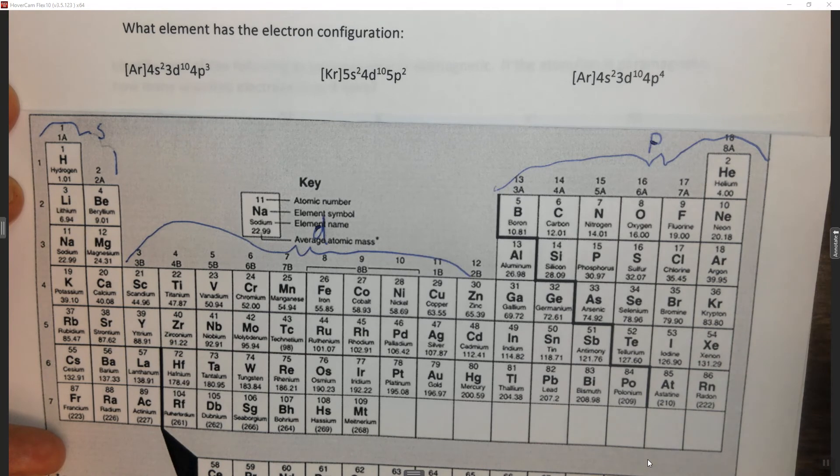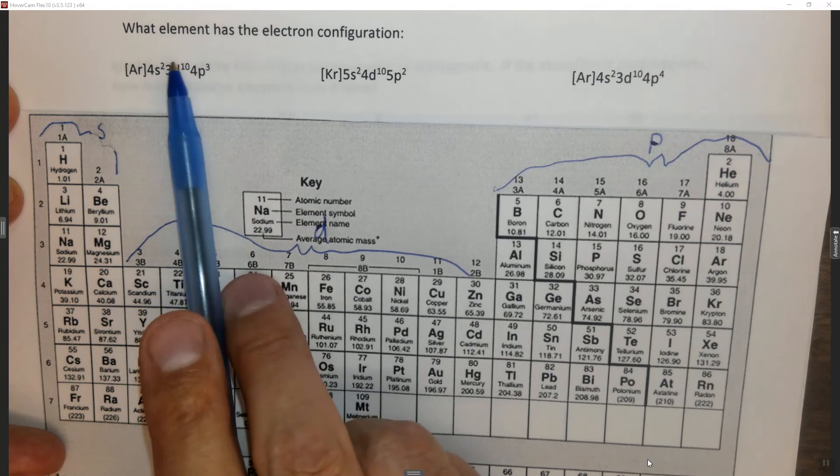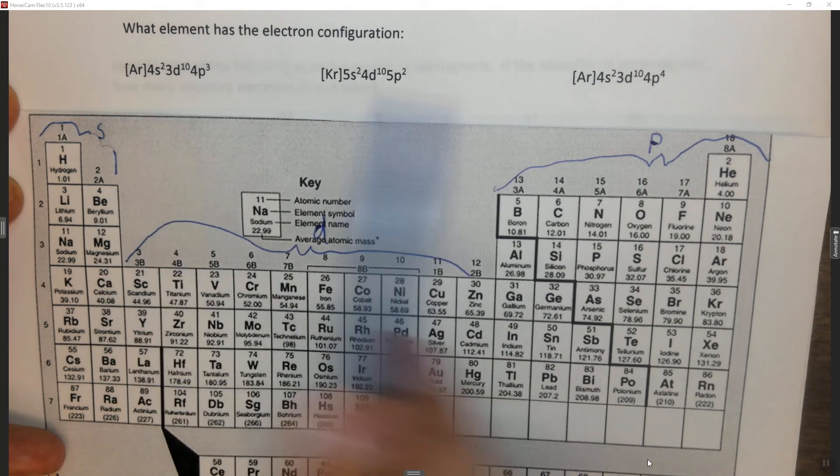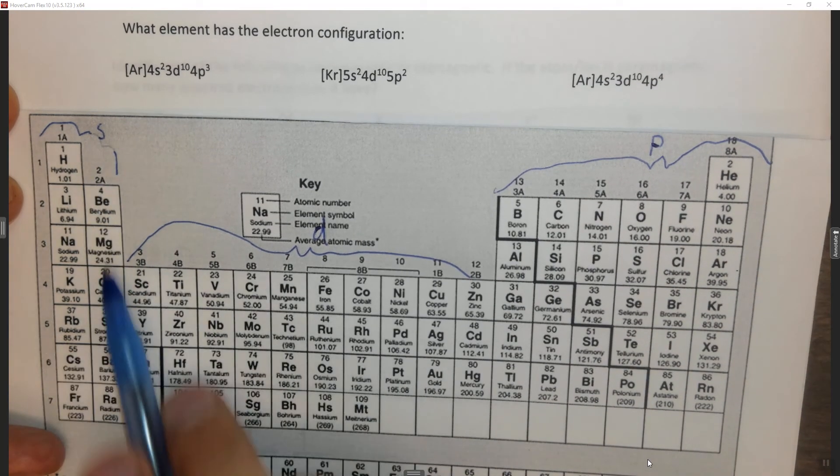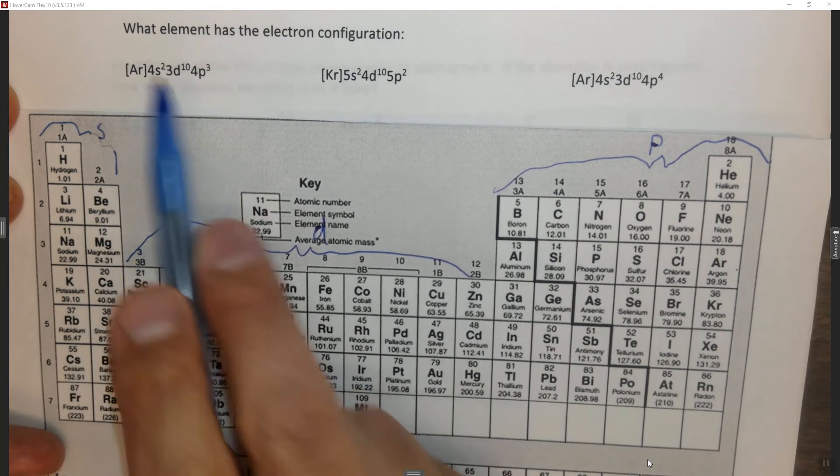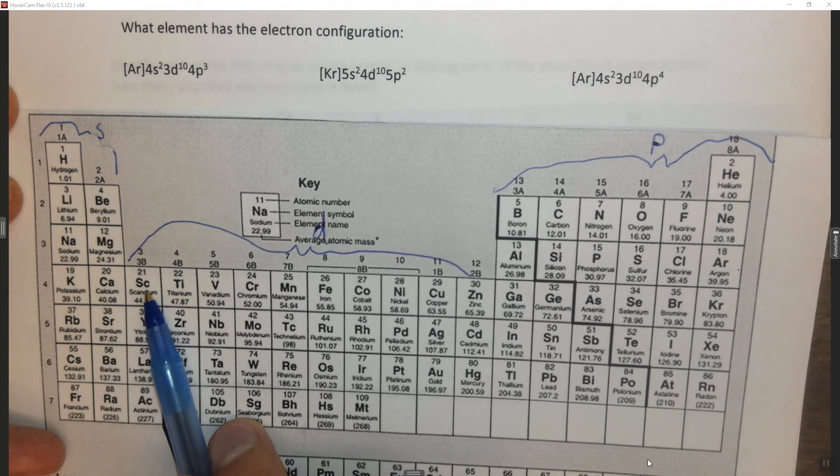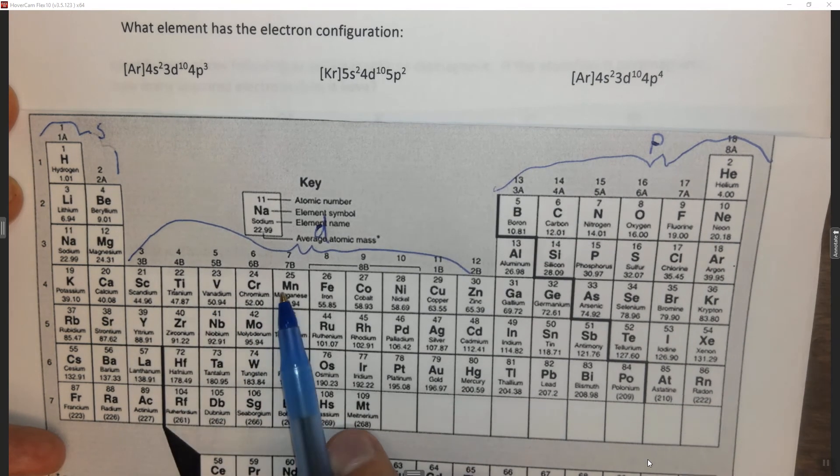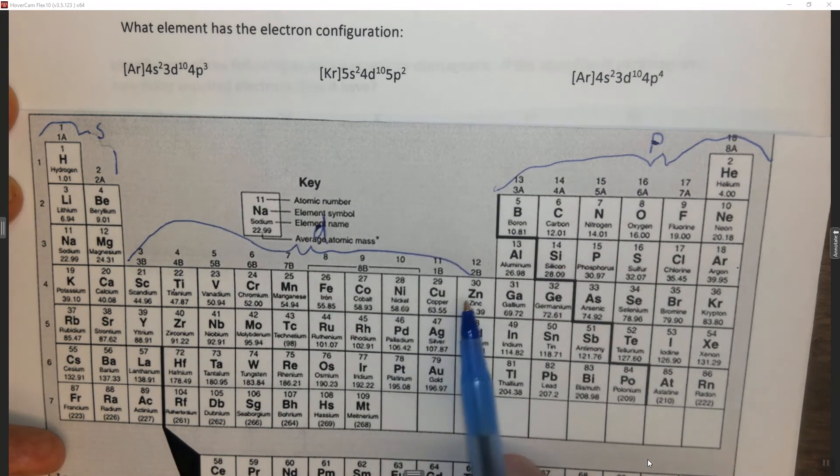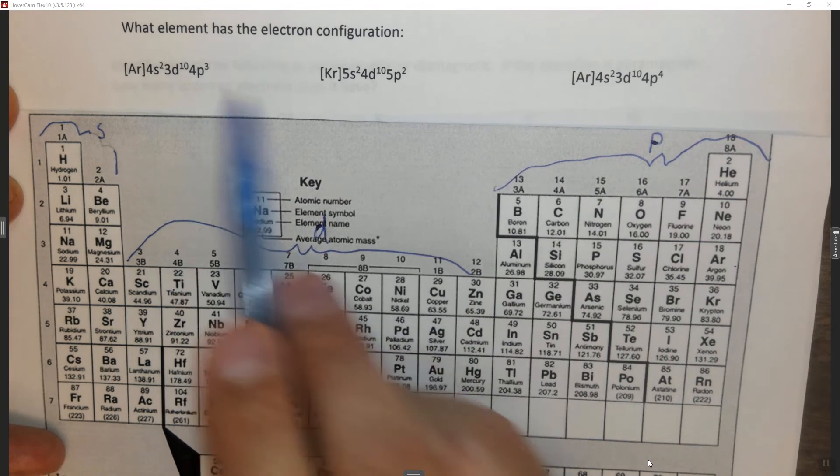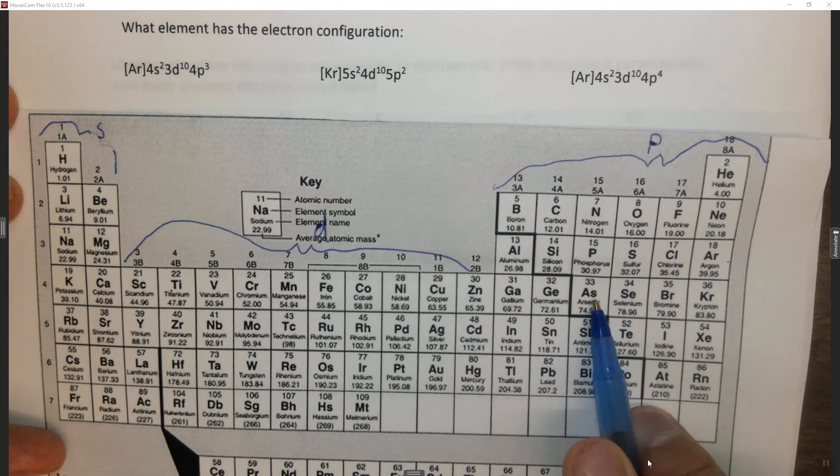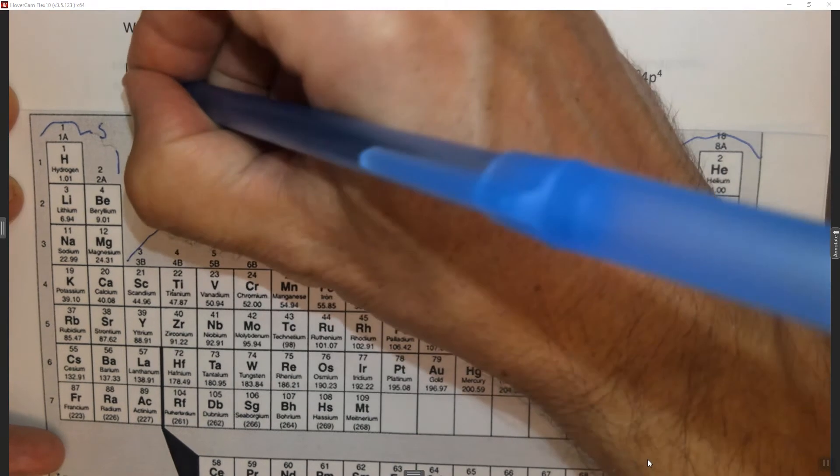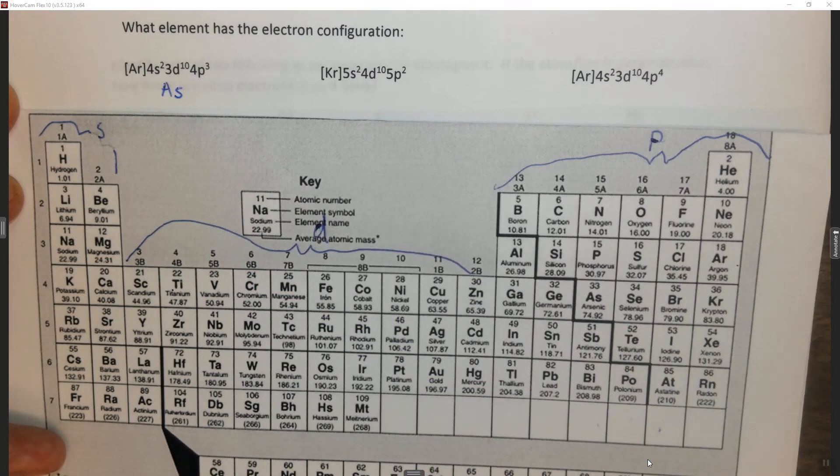So the first way you can do this is you can find the argon, which is here, then this is the 4S block, one two. This is the 3D, remember the D is one less, one, two, three, four, five, six, seven, eight, nine, ten, so 3d¹⁰. 4P, one, two, three. This is the electron configuration of arsenic.